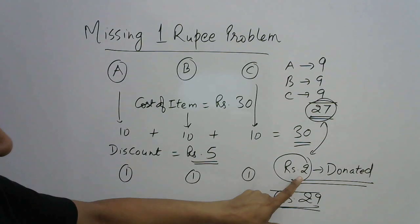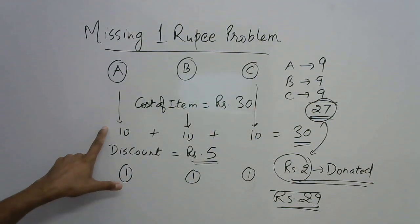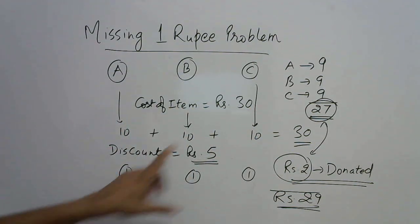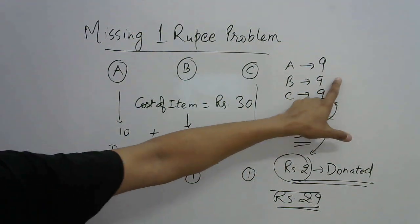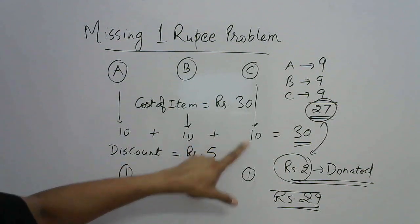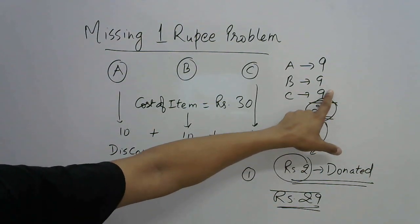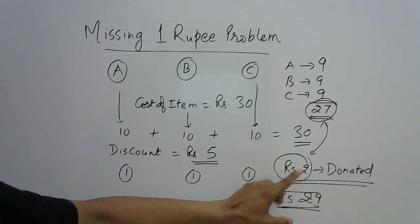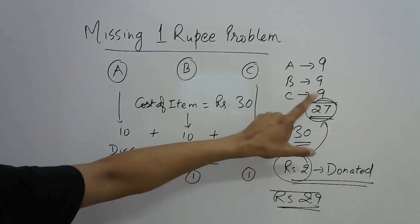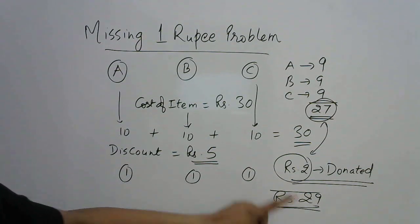So this is 9 plus 9 plus 9 equals 27, and rupees 2 were donated. So we have considered everything. 10 rupees paid by A and he got back 1 so he paid 9. 10 paid by B, got back 1, rupees 9. 10 paid by C and got back 1, rupees 9.